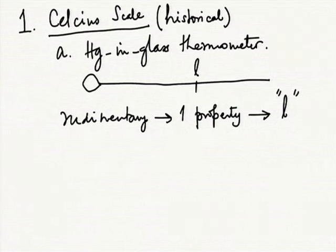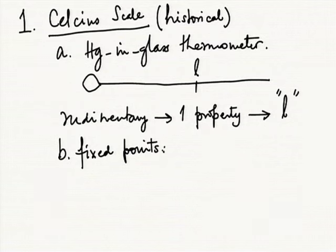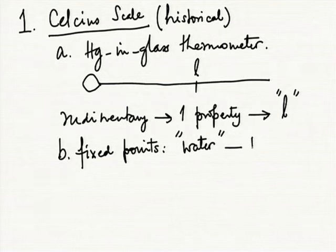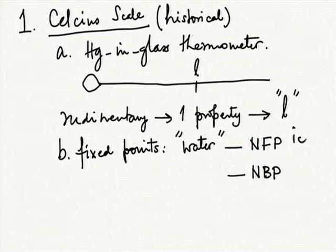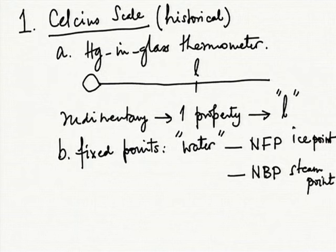If we set up a scale based on the length, that could be a temperature scale. How do you calibrate it? Celsius used two fixed points: he used water as pure as possible, and said that the normal freezing point of water — the ice point — was one fixed point, and the normal boiling point — the steam point — was the other reference point.